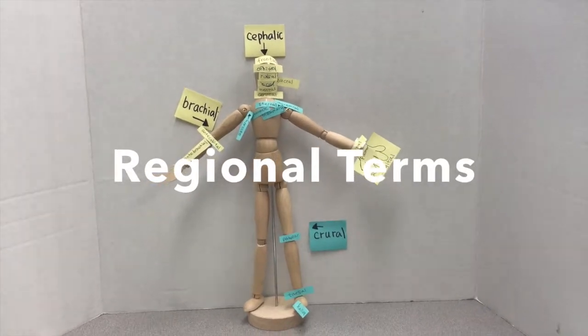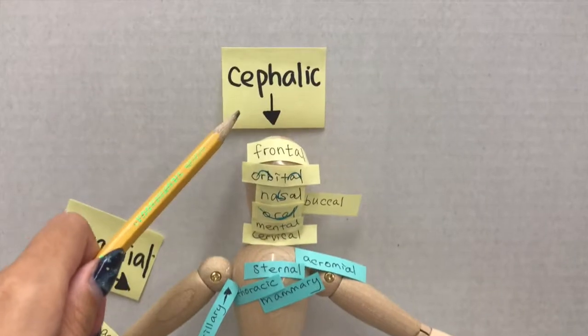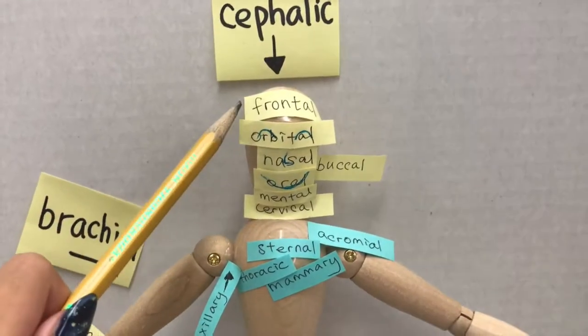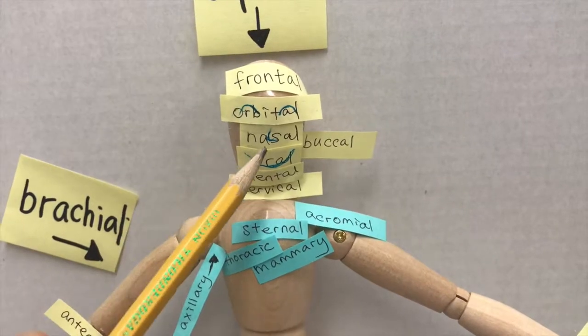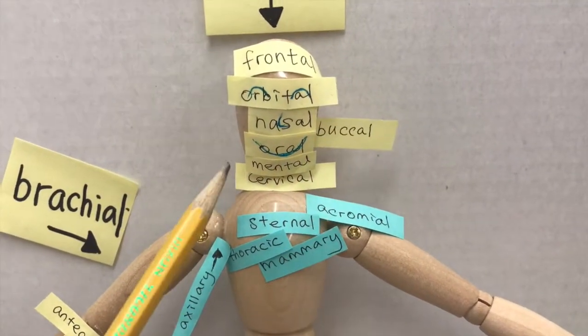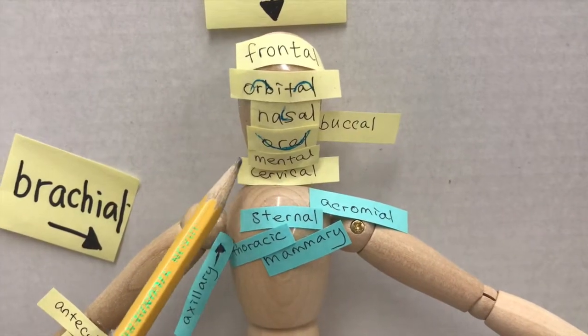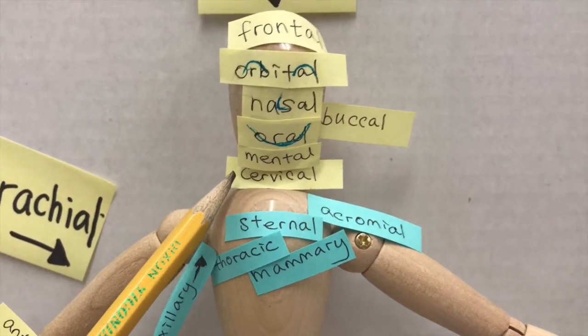Let's first review regional terms in anterior position. Let's start with cephalic (head), and we have frontal (forehead), orbital (eye), nasal (nose), buccal (cheek), oral (mouth), mental (chin), and cervical (neck).